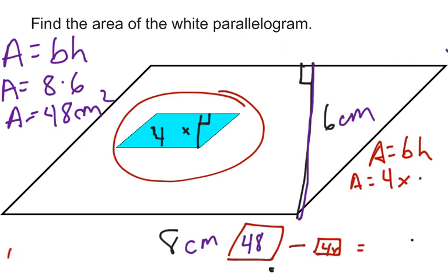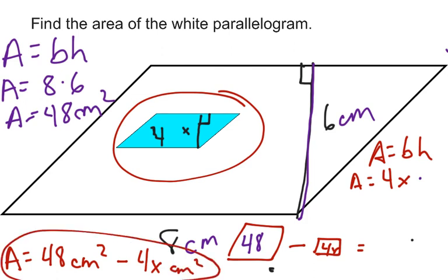My area of the white parallelogram is 48 centimeters squared minus 4x centimeters squared. And that's my simplified area.